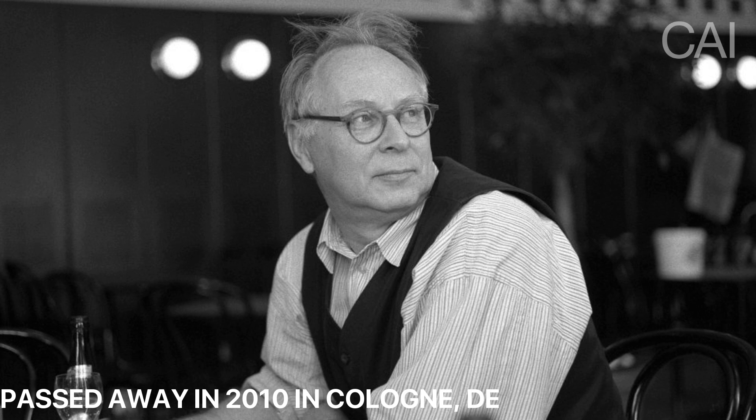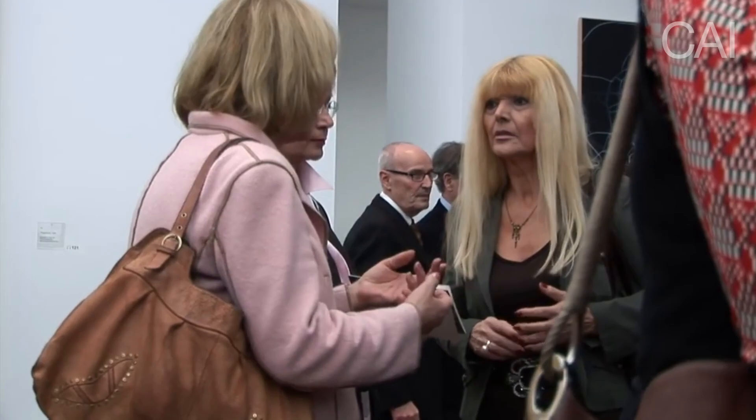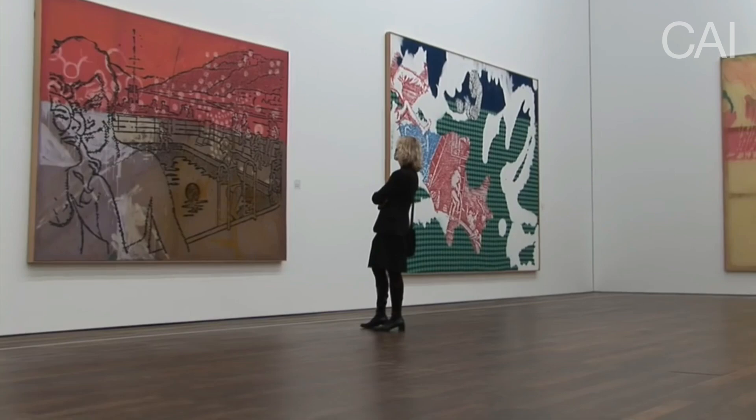Born in 1941 in Hüls, East Germany, and passed away in 2010 in Cologne, Sigmar Polke has created a unique and complex body of works, including the Durer Rabbit from 1968. His works have helped to define the art of the time. In the 1960s, he forged a new unique vision of German art which, during the post-war years, had been largely derivative of gestural abstraction.